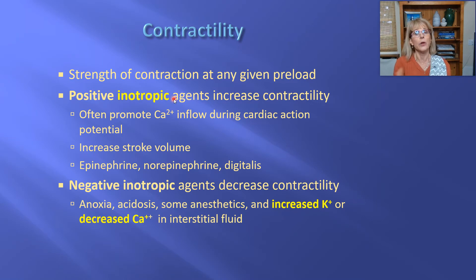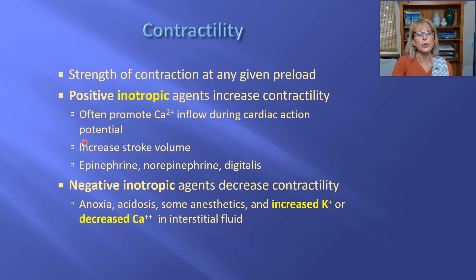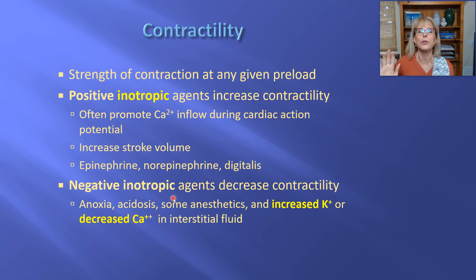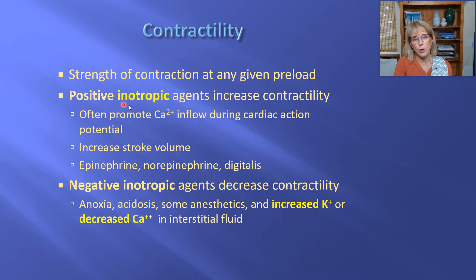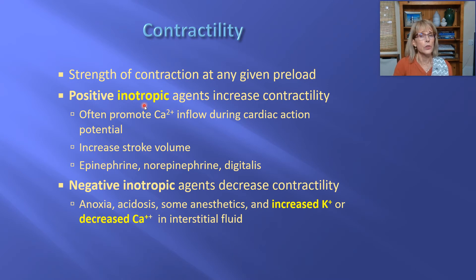Thyroid hormone is a positive inotropic agent. Epinephrine is a positive inotropic agent. Drugs to decrease high blood pressure are very often negative inotropic agents — we want the heart to ease off because it is putting out too much blood, causing high blood pressure. Remember the term inotropic or inotrope: it refers to how hard the heart is beating, meaning ejection fraction.